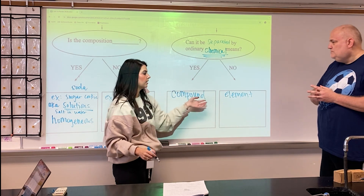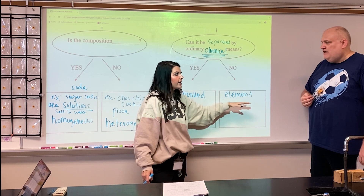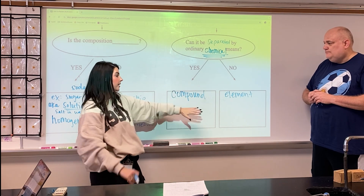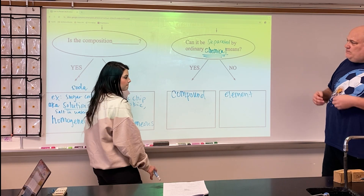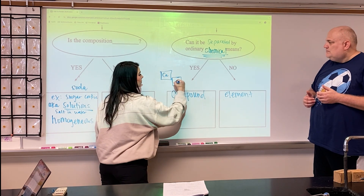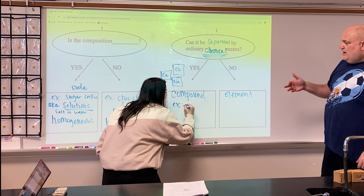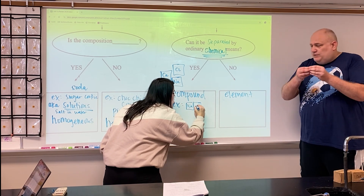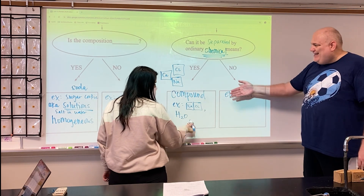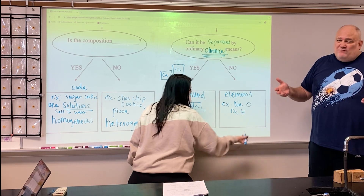If something is as simple as it can possibly be — if going any further would change its identity — it's an element. Everything on the periodic table is an element: calcium, sodium, chlorine, and so on. If something can still be further separated, it's a compound — two or more atoms put together. For example, NaCl is very different from sodium by itself or chlorine by itself.